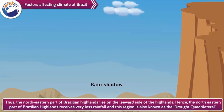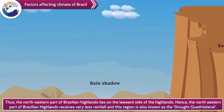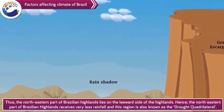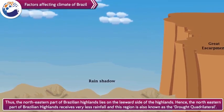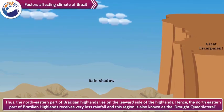Factor 8: Thus, the northeastern part of the Brazilian highlands lies on the leeward side of the highlands. Hence, the northeastern part of the Brazilian highlands receives very less rainfall, and this region is also known as the drought quadrilateral.